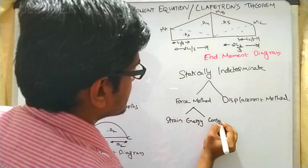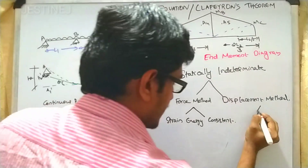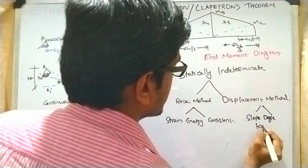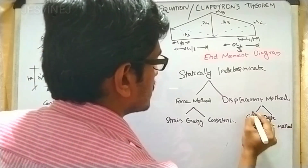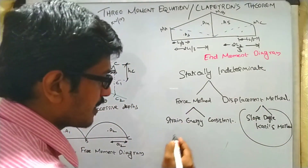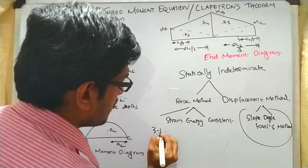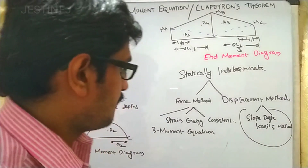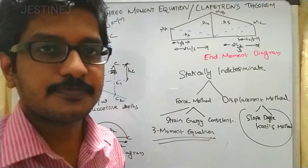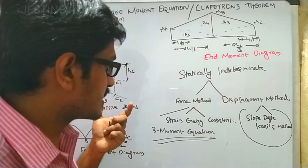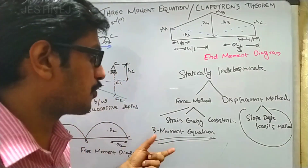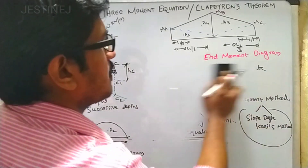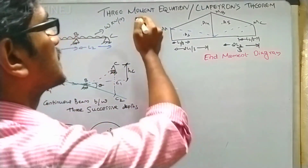Regarding the displacement method, we have the slope deflection method and the moment distribution method. We will discuss all those approaches in Structural Analysis 2. There is also one more approach: the three moment equation. In our first module, we will discuss the three moment equation — its derivation and how to solve statically indeterminate structures using it.